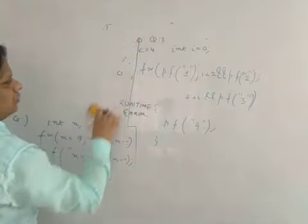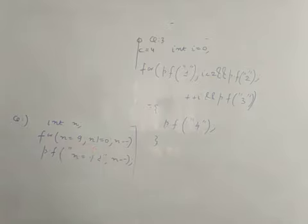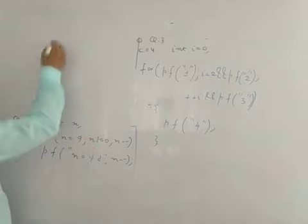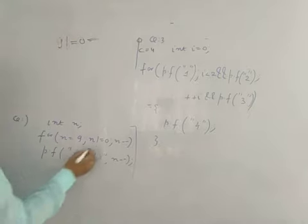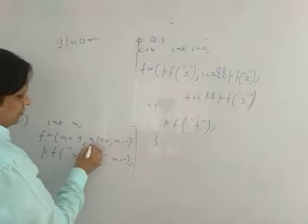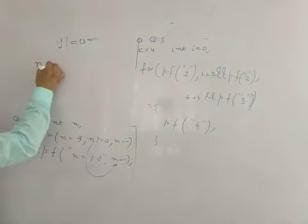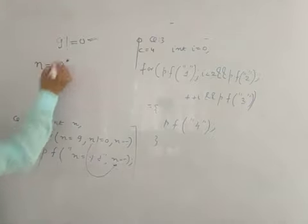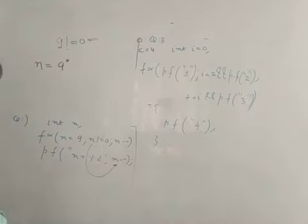Moving on to the next question: N is equal to 9, while N not equal to 0. It's pretty simple. When N is 9, the condition 9 not equal to 0 is true, so we come down and print N--. Since it is post-decrement, the current value 9 gets printed first, then N becomes 8.